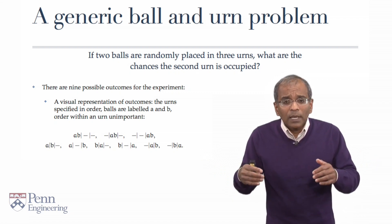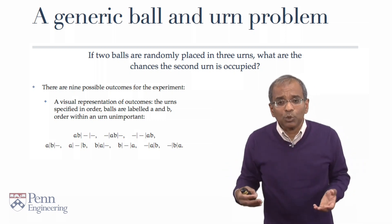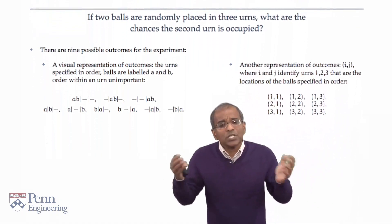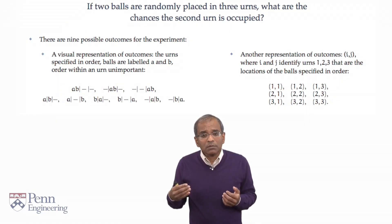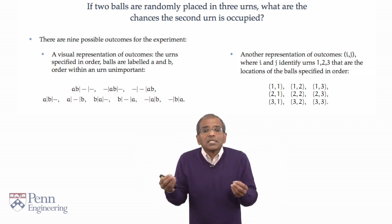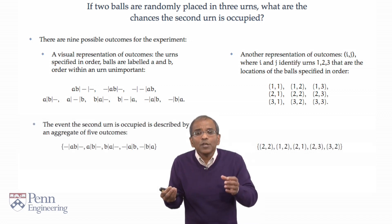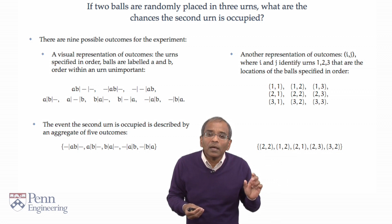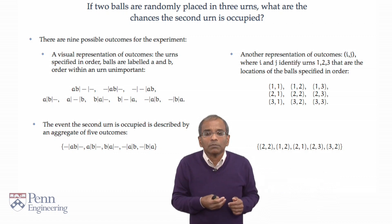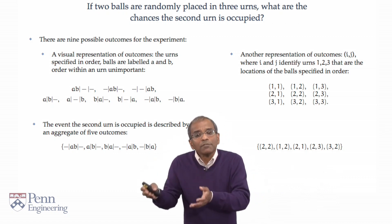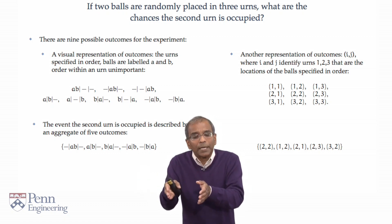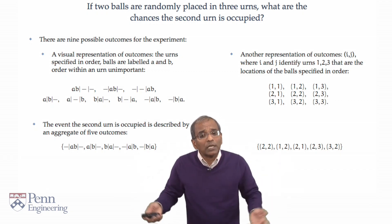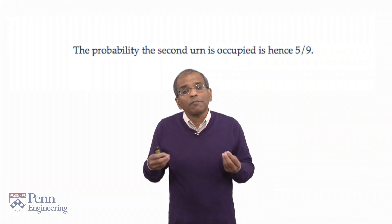All roads lead to Rome. There are many notations one could adopt to describe the underlying problem; it's important to pick one that is compact and not overly cumbersome. The event of interest is simply that the second urn is occupied. In the numerical pairwise representation, this means a pair where one or both values equal 2 — there are five such possibilities. In the visual notation, we identify urns where the middle urn is not empty — again five possibilities. Assuming random selection so all outcomes are equally likely, the chance that the second urn is occupied is exactly five in nine.